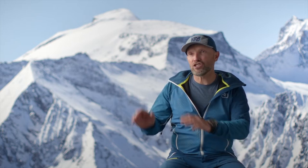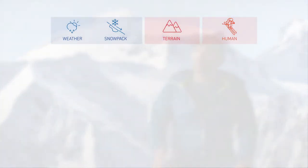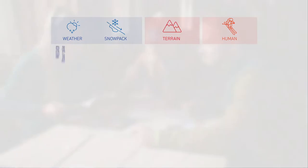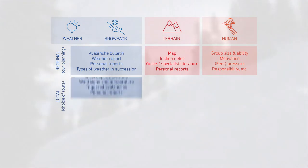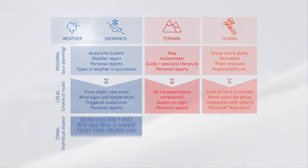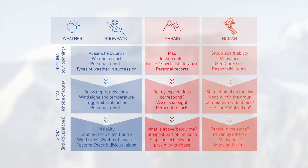When estimating avalanche danger, it helps to compose a specific grid. The ideal grid is this 3x3. 3x3 means that for conditions, terrain, destination, and people, we take a look at the spatial levels: first the tour planning, then the tour in and of itself, and finally the individual slope. This grid makes it easy to break down and deal with each of the aspects.